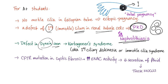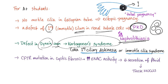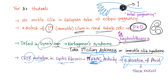A defect in the dynein arm causes Kartagener syndrome, also known as primary ciliary dyskinesia or immotile cilia syndrome. In cystic fibrosis, a CFTR mutation leads to increased activity of the epithelial sodium channel (ENaC), causing decreased secretion of fluid. That's why children with cystic fibrosis have a significant problem with thick mucus.